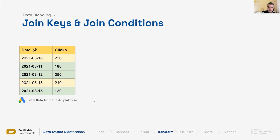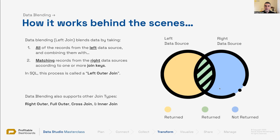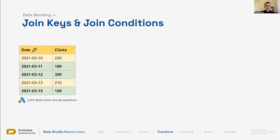Now let's look at some tables. In order for Data Studio to match and blend data, it requires a join key or condition — what should it look for in the right data source. If it's one field we're looking up, it's a join key, similar to a VLOOKUP in Google Sheets. If we're looking up multiple values, it's a join condition — a combination of different join keys.